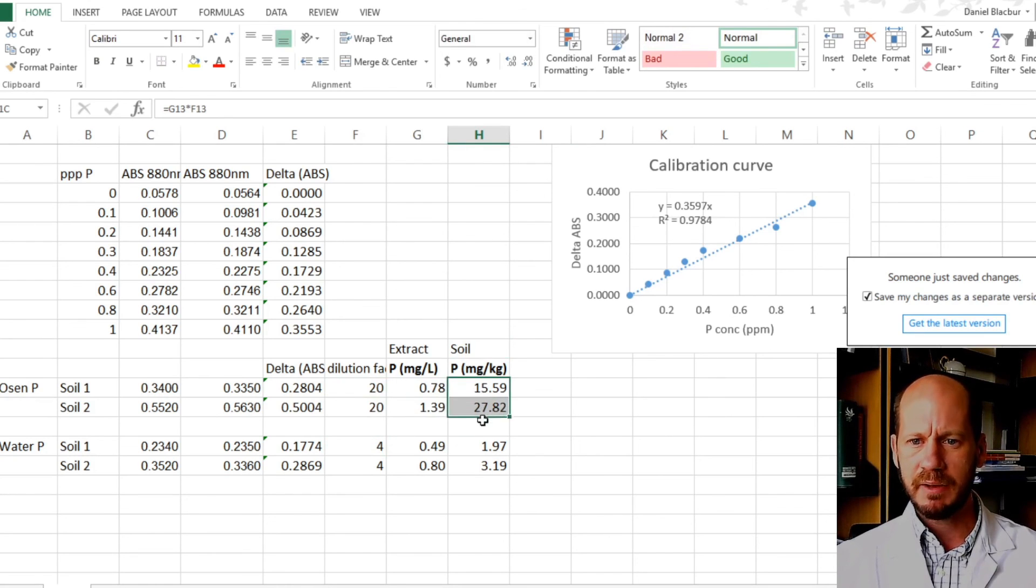Here is the calculation as milligrams per liter in the extract, and here is milligrams per kilogram in the soil. You just need to multiply by that value, the dilution factor that you have. This is the value that you need to use for your fertilizer recommendation and your interpretation of how much phosphorus there is bioavailable for your crops.